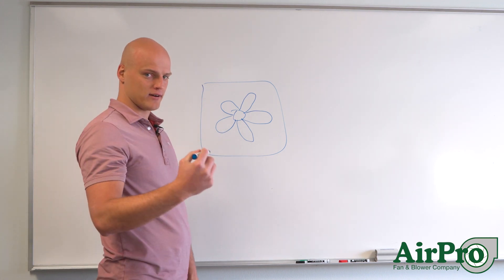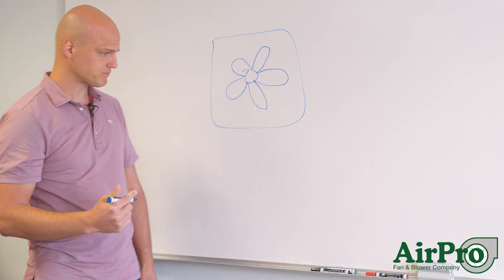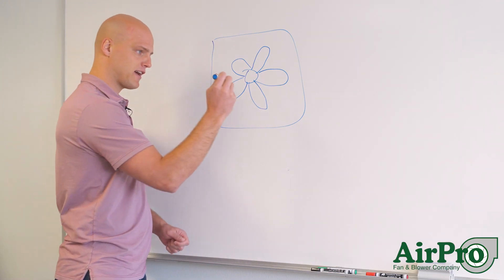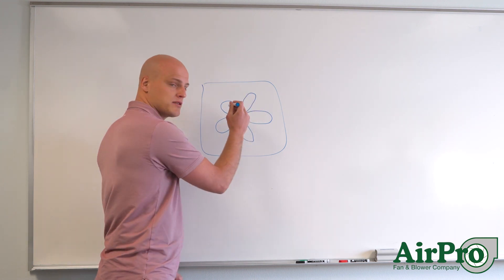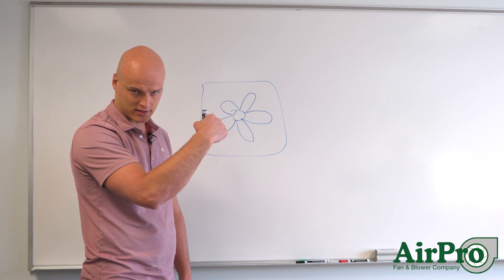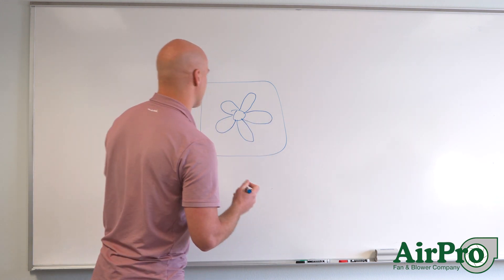And so air, let's say the fan is blowing that way towards the whiteboard, air is coming to the fan, being processed by the blades, and continuing to blow in the same direction that it came into the fan. That's an axial fan.